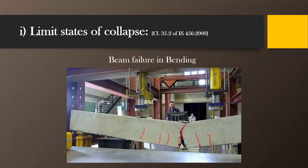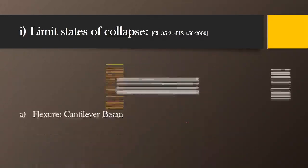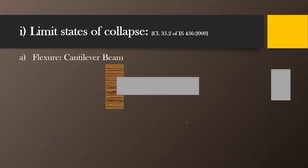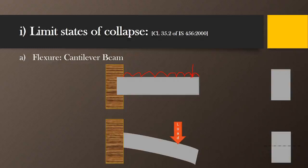That is called the limit state of collapse in case of flexure for a simply supported beam. Now let us consider the example of a cantilever beam. The conditions are reversed for a cantilever beam. If the cantilever beam is subjected to a point load at the end or a UDL, the deformation will occur in this manner — the beam deforms such that tension is at the top and compression is at the bottom.